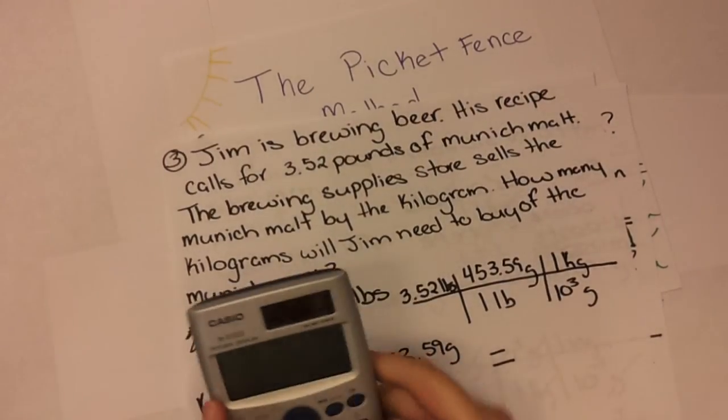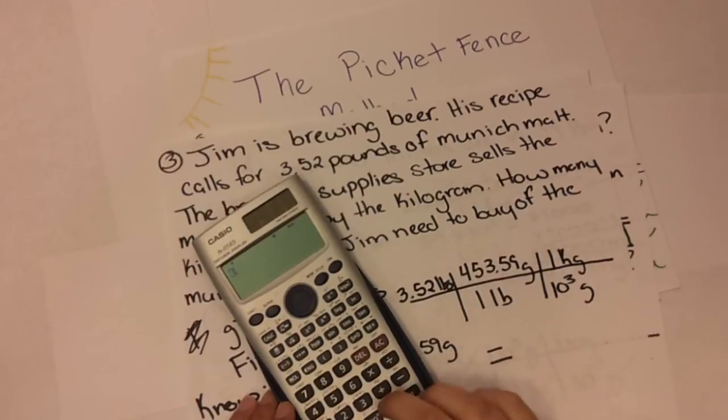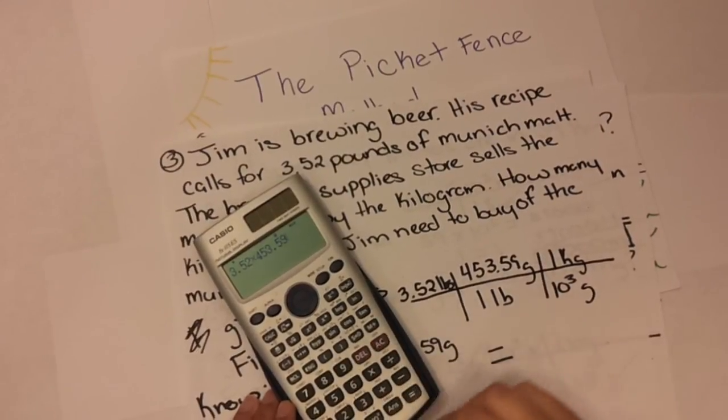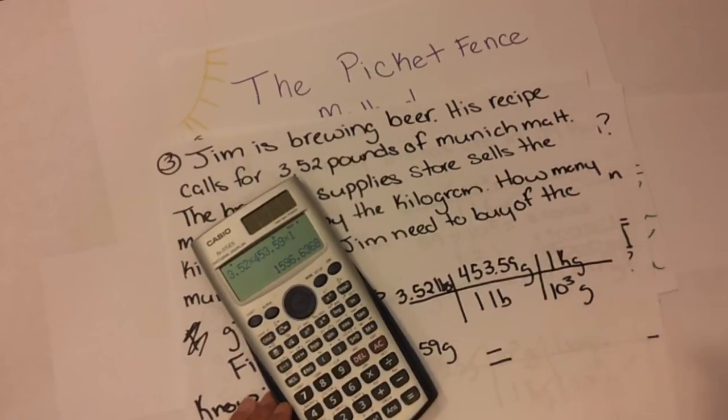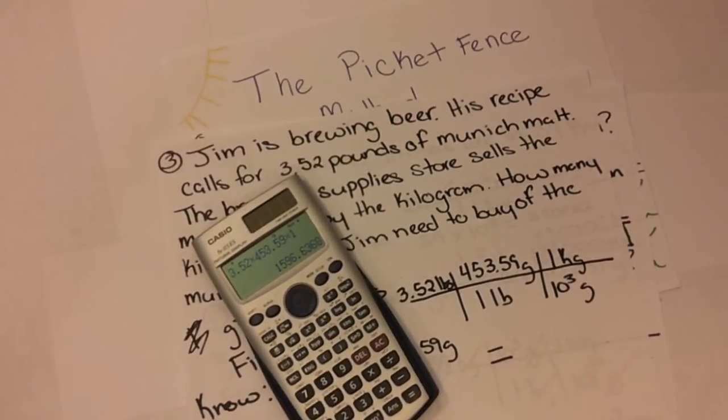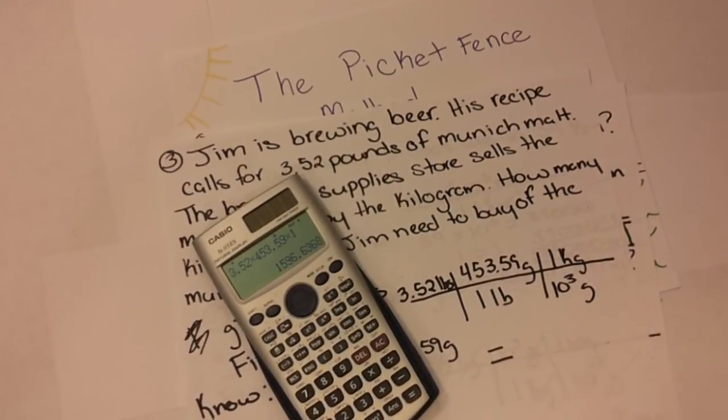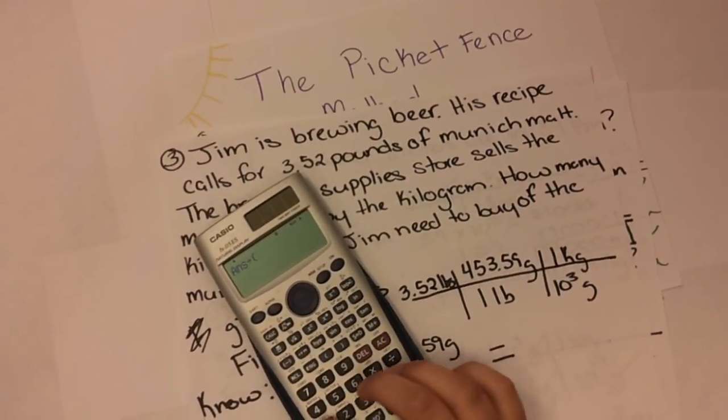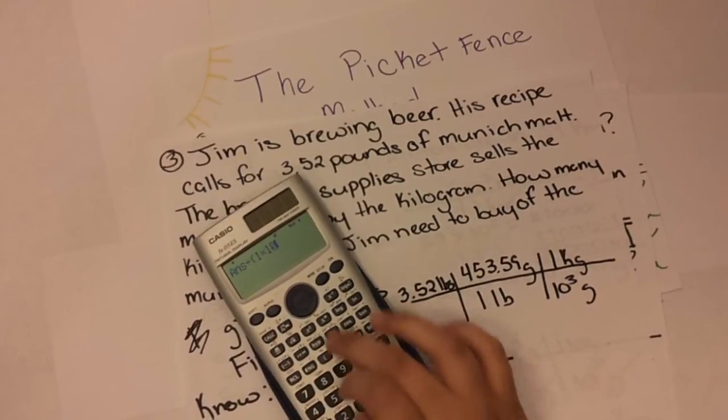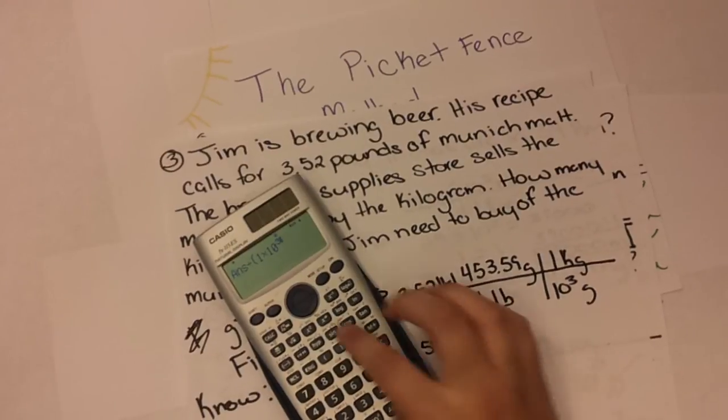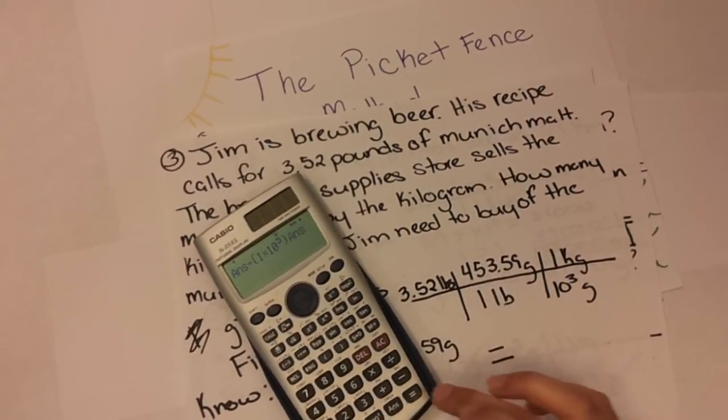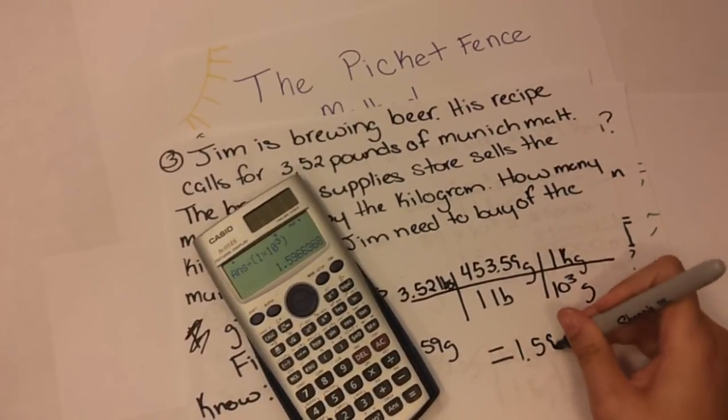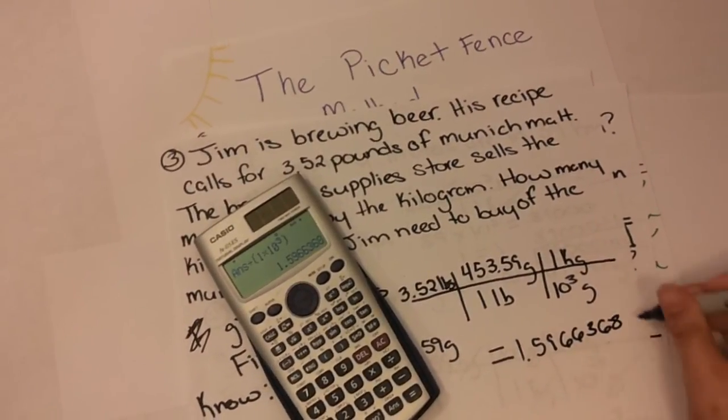Once again, we've got to get that trusty calculator out. 3.52 times 453.59 times 1 equals 1,596 point a lot of decimal points, which we never round off until the end. Then we're going to divide that by 1 times 10 to the third.